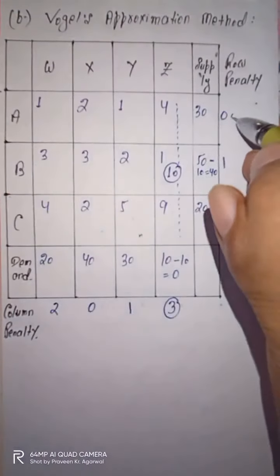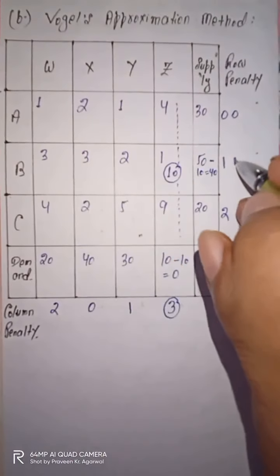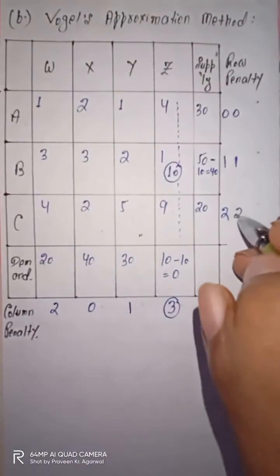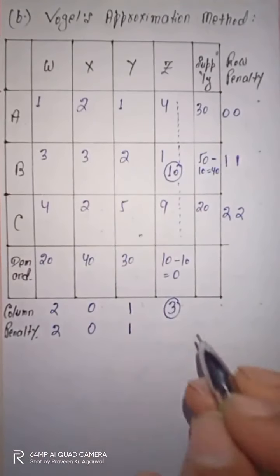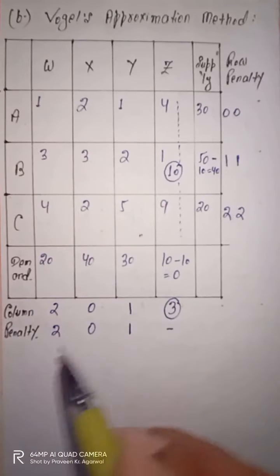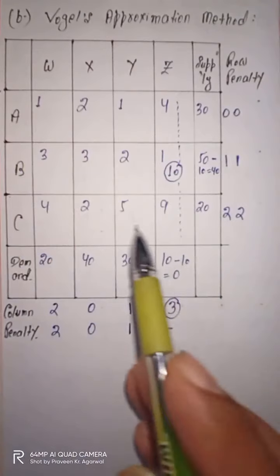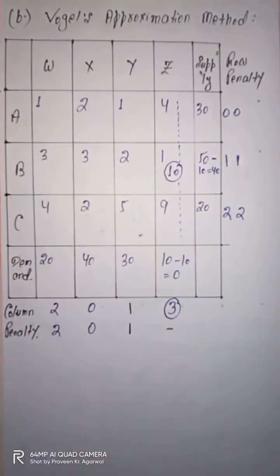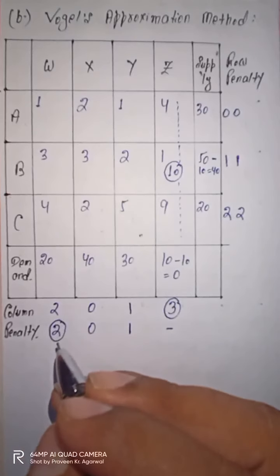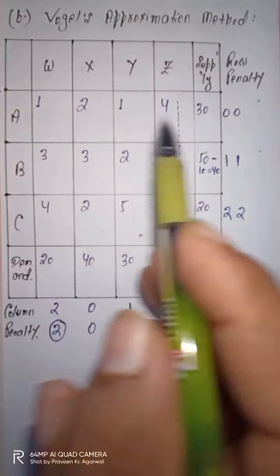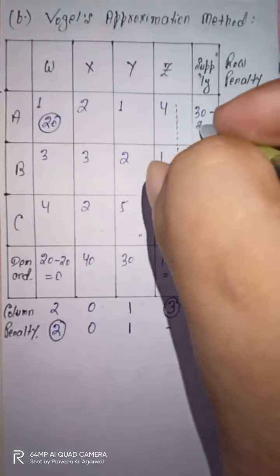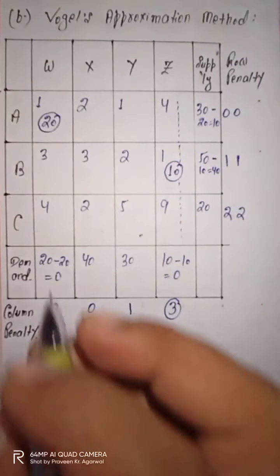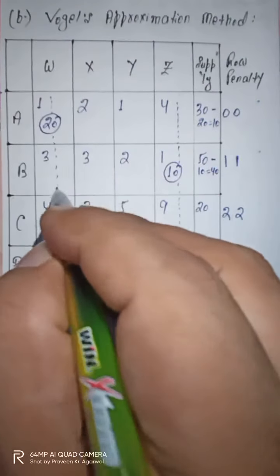Recalculating penalties: row 1 penalty = 0, row 2 = 1, row 3 = 2. Column 1 = 2, column 2 = 0, column 3 = 1. Maximum penalty is 2. Minimum cost is 1 at cell (1,1). Supply is 30 and demand is 20, so allocation is 20. 20 minus 20 equals 0 and 30 minus 20 equals 10. Column W is eliminated.